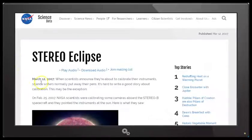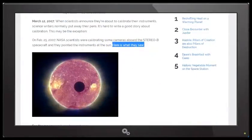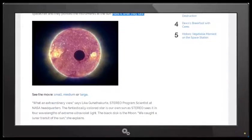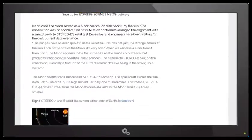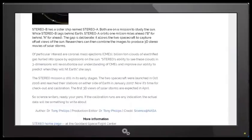STEREO Eclipse. The article is dated March 12, 2007, and it states on February 25, 2007, NASA scientists were calibrating some cameras aboard the STEREO B, STEREO Behind spacecraft, and they pointed the instruments at the sun. Here is what they saw. Wow. Is it Planet Enoch? Is it Nibiru? Is it Planet X? No, it is not. It clearly says here that the black disc is the moon. It says here, 'We caught a lunar transit of the sun,' she explains. And you can scroll down, I'll provide the links in the description area. There are a number of links and animations underneath this article.